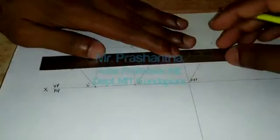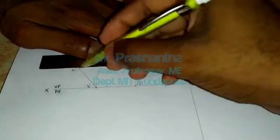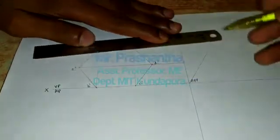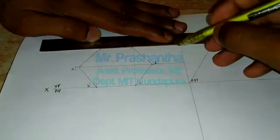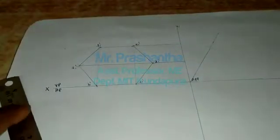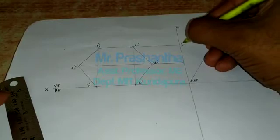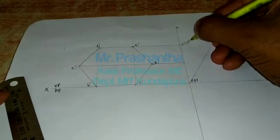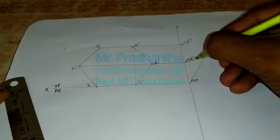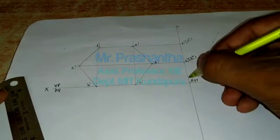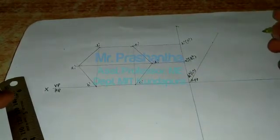Next, project these points. Here these points are imaginary points in side view. So this becomes F1 double dash, E1 double dash. Here this becomes A1 double dash and D1 double dash. This point becomes B1 double dash, C1 double dash.